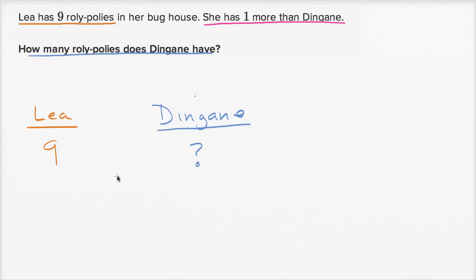It's always good when you look at a word problem like this to ask: will Dingane have more or less than Leah? Well, it says Leah has one more than Dingane, so Leah is going to have more — one more. So Dingane is going to have one less than Leah. If Leah has one more than Dingane, then Dingane has one less than Leah.